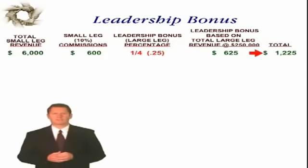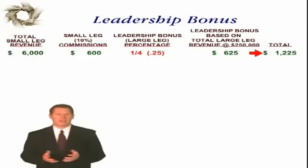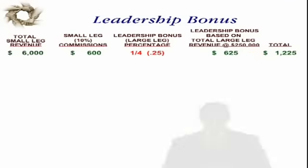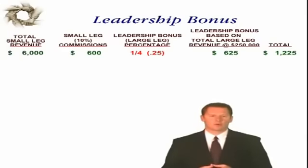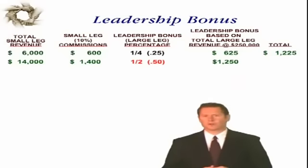Keeping in mind that this is residual income, income that for the most part happens despite what you do or don't do. It does not include retail, Fast Start, or Mega Match revenue. Now let's say that over the course of a few months, you grow your small leg to $14,000 per month. Your residual income grows to $1,400 on the small leg percentage and $1,250 on the large leg percentage, for a total of $2,650 in residual income. When your small leg jumps to $30,000 in revenue, your combined organization residual income grows to $5,500.